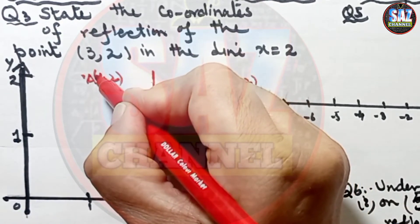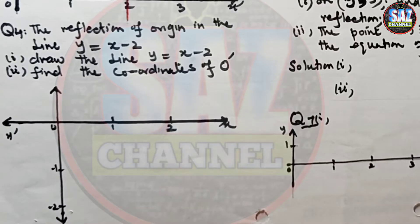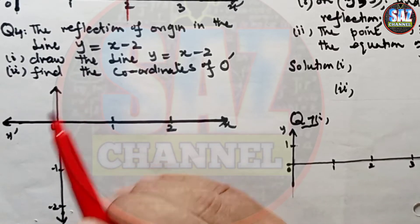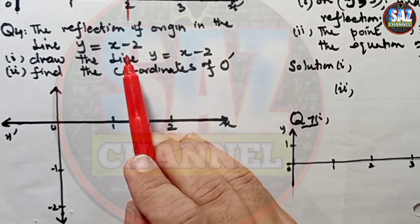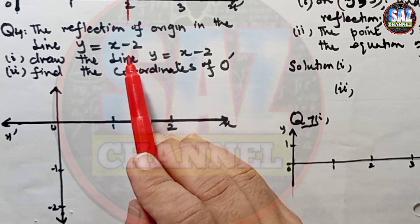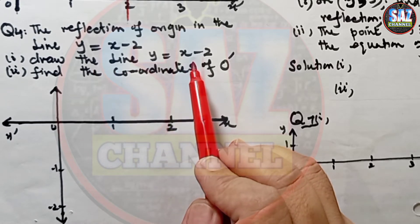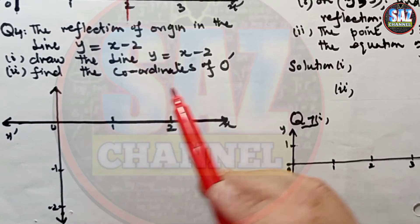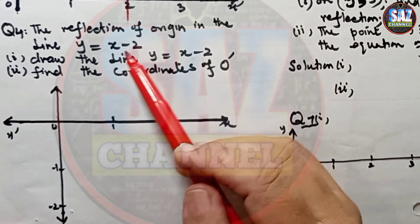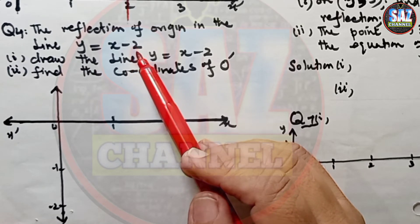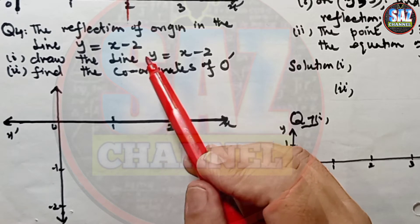Let's move to question 4. The question says the reflection of the origin in the line y equals x minus 2 is O dash. On the graph paper, draw the line y equals x minus 2 and find the coordinates of O dash. First, we need to plot the line y equals x minus 2.